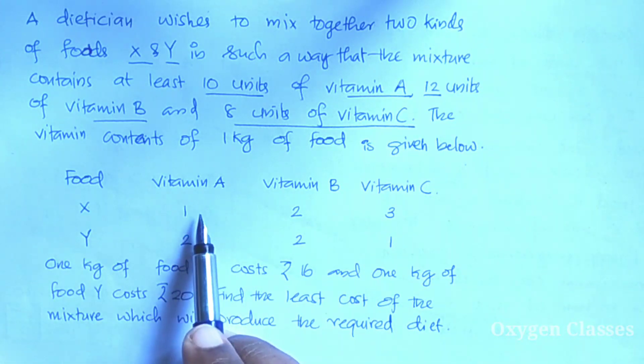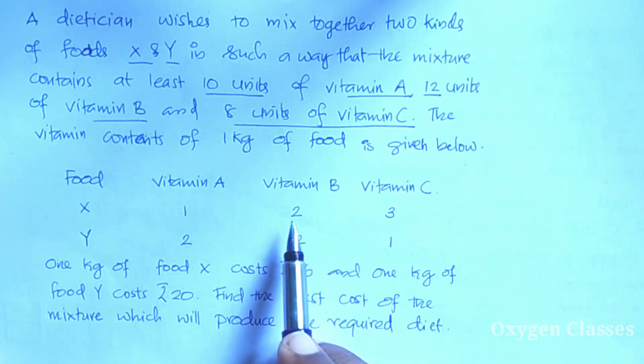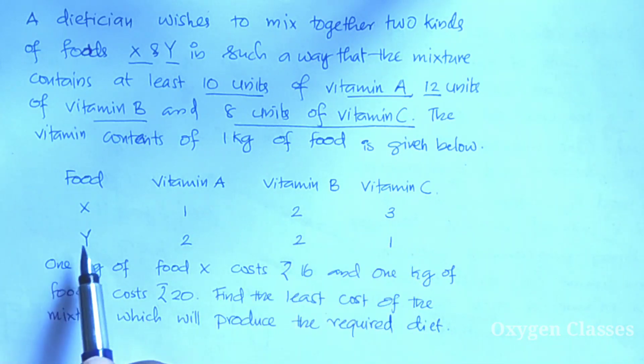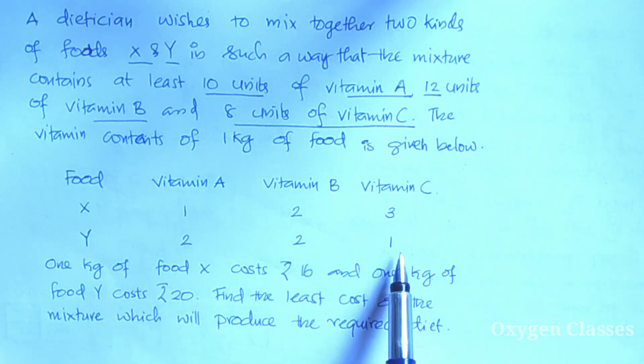The vitamin contents of 1 kg of food is given below in the table. Food X has vitamin A content of 1 unit, vitamin B content of 2 units, and vitamin C content of 3 units. Food Y has 2 units of vitamin A, 2 units of vitamin B, and 1 unit of vitamin C.